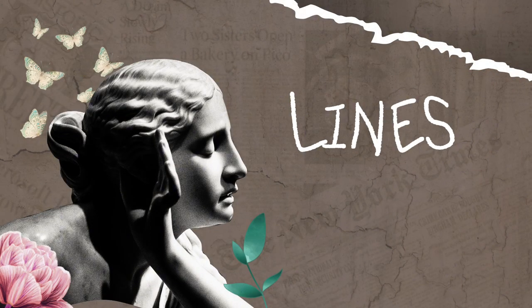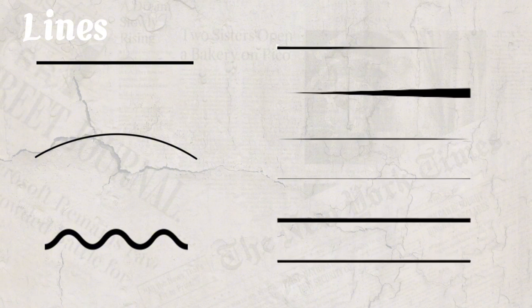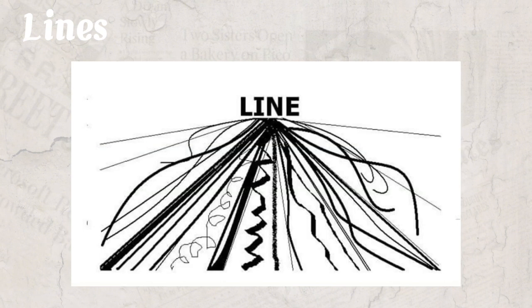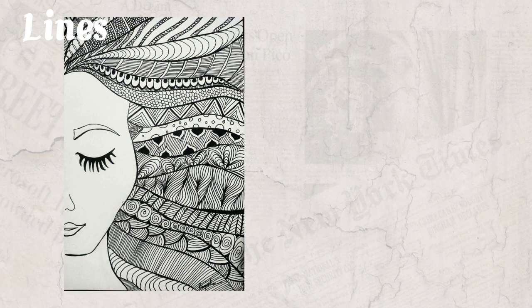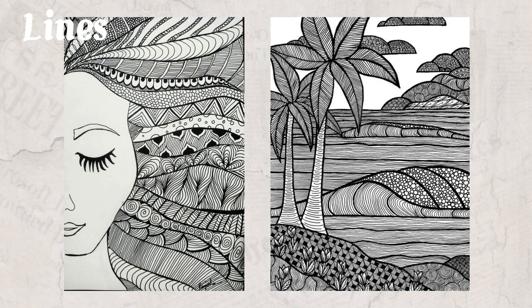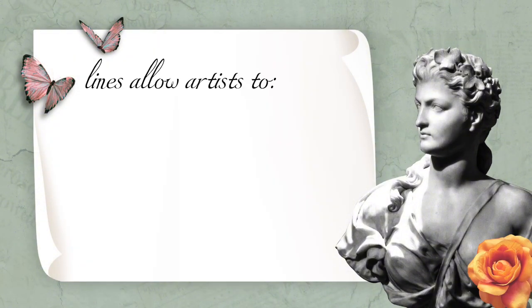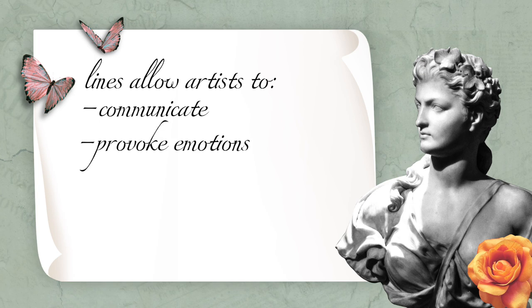Lines are fundamental elements in art, shaping the very essence of visual storytelling. Lines can be straight, curved, or organic, and can vary in thickness and volume. Lines provide structure, direction, and emotion. Straight lines offer stability, curves bring fluidity, and diagonals ignite dynamism. Lines or strokes can be used in hatching and cross-hatching to shade forms. Lines are an indispensable tool in artists' palette, allowing them to communicate, provoke emotion, and guide the viewer through their visual journey.